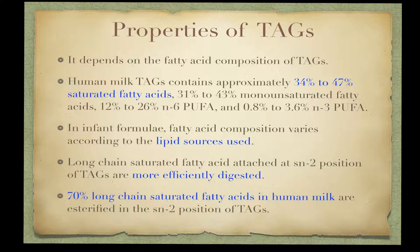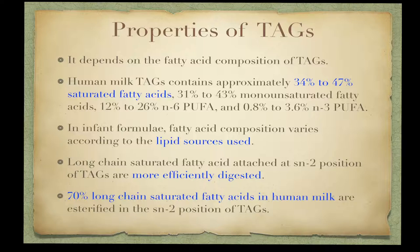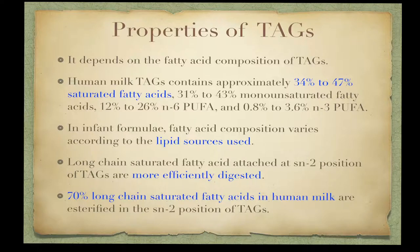The fatty acid composition varies according to the lipid sources used. For example, palm oil has a high palmitic acid content with no short or medium chain fatty acids, whereas these fatty acids are present in high proportion in coconut oil. Use of different lipid sources therefore translates into differences in content and proportion of short and medium chain fatty acids. Most preterm and some term infant formulas contain medium chain triglycerides derived from coconut oil.